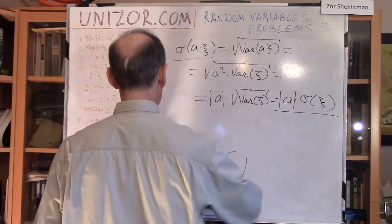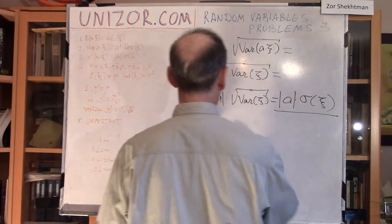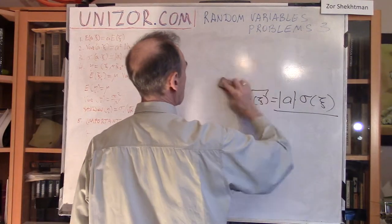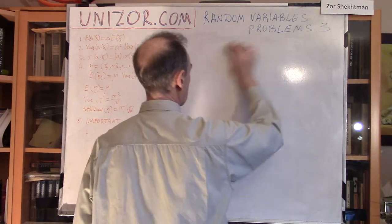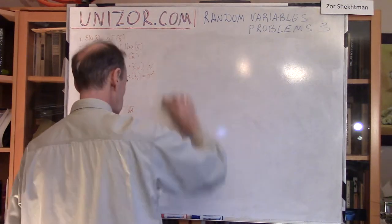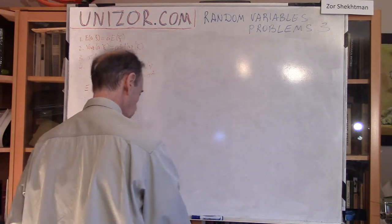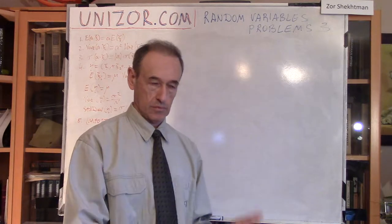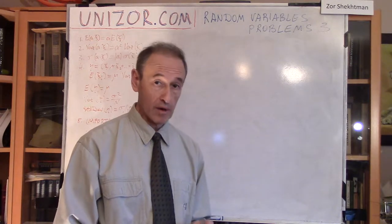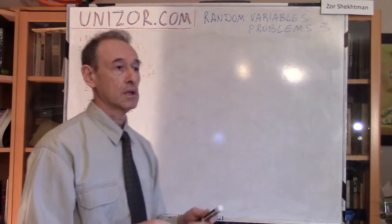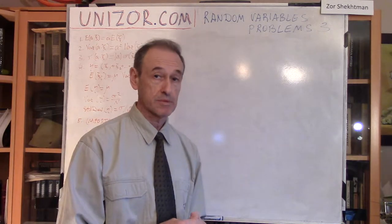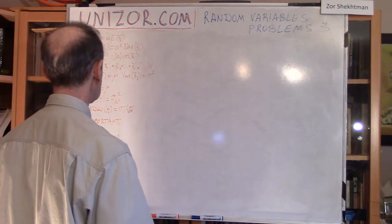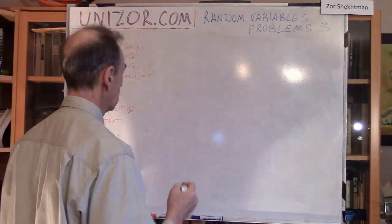Basically, these are three properties of a constant multiplied by a random variable: the expectation is multiplied by the same constant; the variance is multiplied by the square of the constant; and the standard deviation is multiplied by the absolute value of the constant.